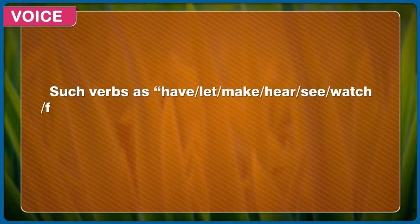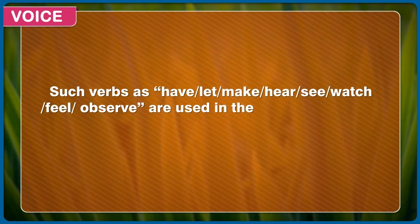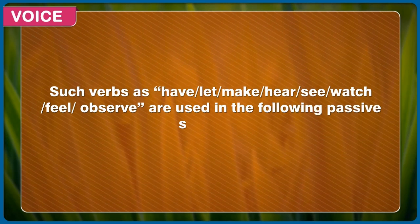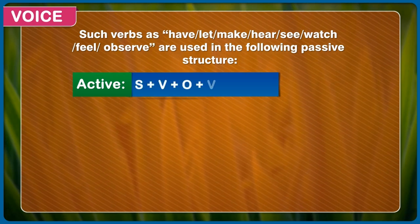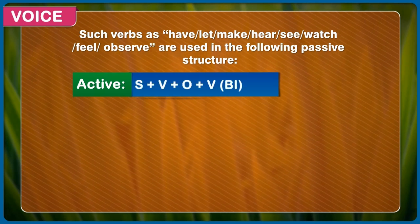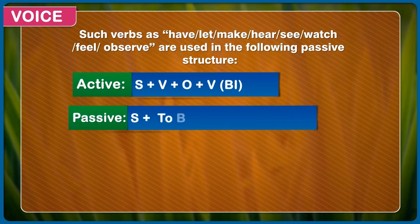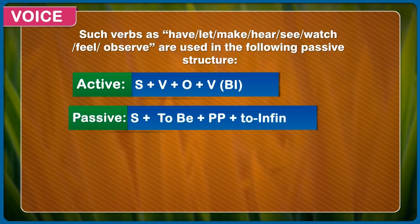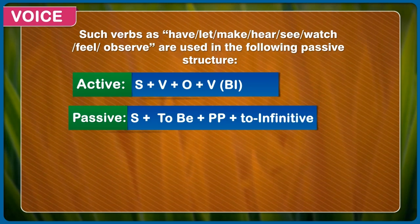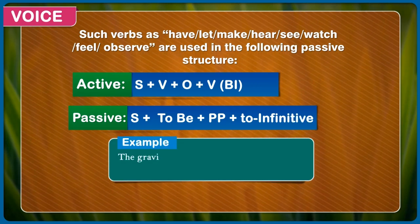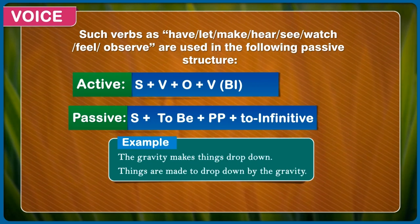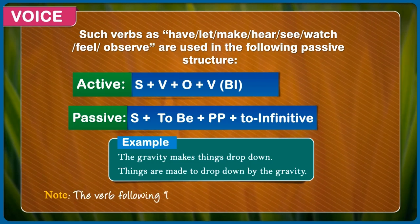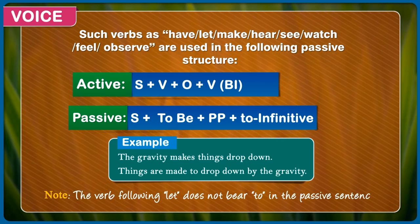Such verbs as have, let, make, hear, see, watch, feel, observe are used in the following passive structure. Active: subject + verb + object + verb. Passive: subject + to be + past participle + to infinitive. Example: The gravity makes things drop down. Things are made to drop down by the gravity. Note: the verb following 'let' does not bear 'to' in the passive sentence.